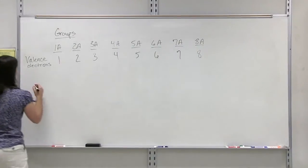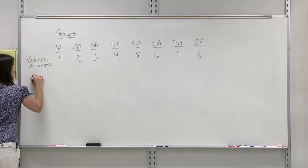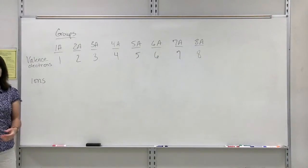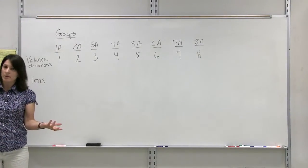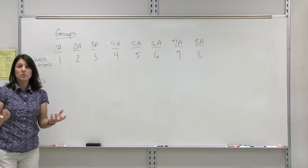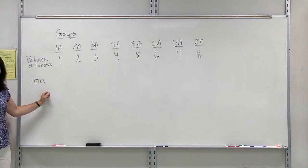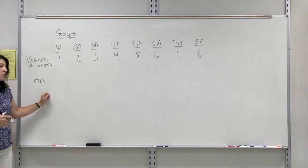So when we talk about ions, ions are atoms that do not have an equal number of protons and electrons. If they are equal, they would be neutral. An ion has an unequal number, so they are either going to be positively charged or negatively charged.